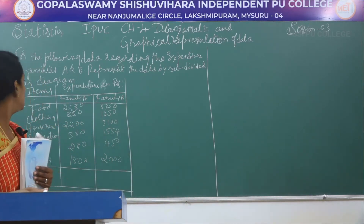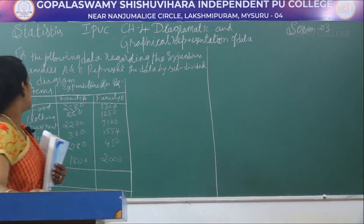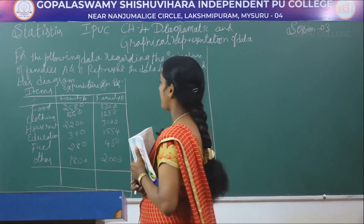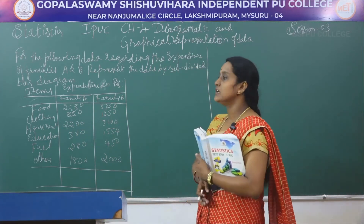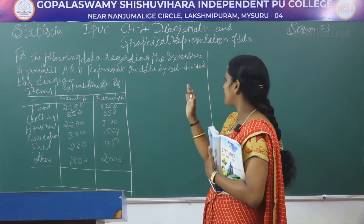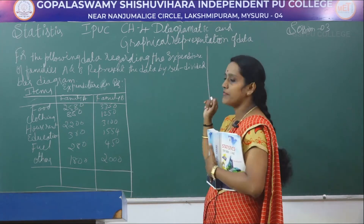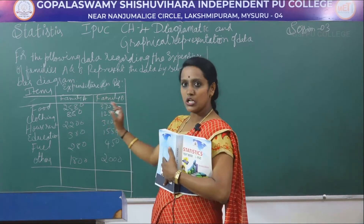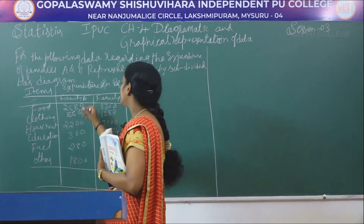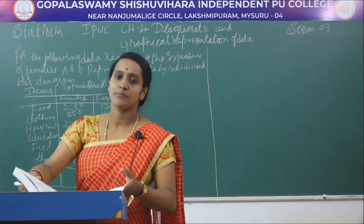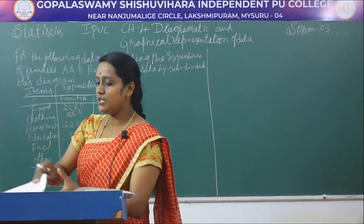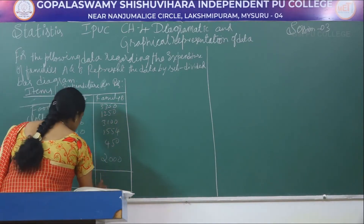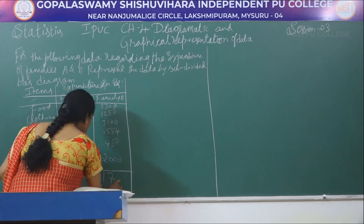In this problem they have given the expenditure of two families, family A and family B, and the items. For this we have to represent this data using subdivided bar diagram. First we will take the total of family A and family B. The total of family A is 8,100 and the total of family B is 11,700.